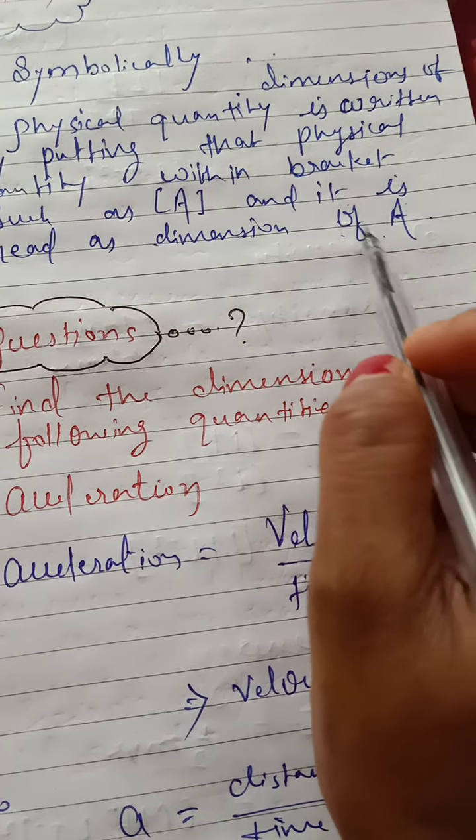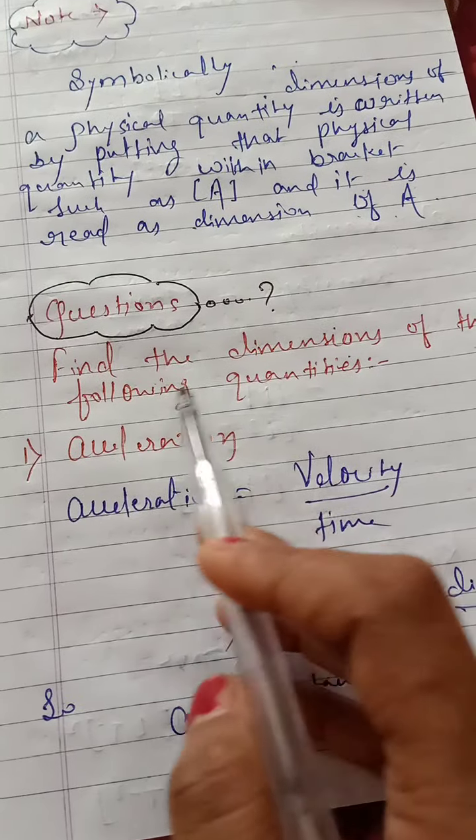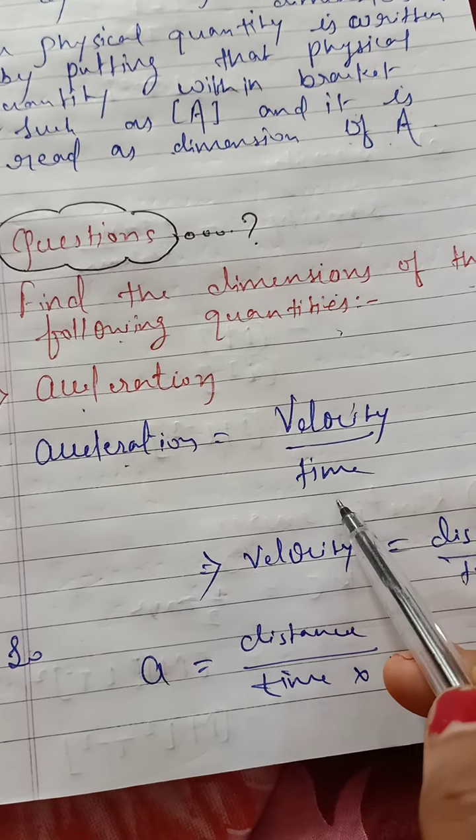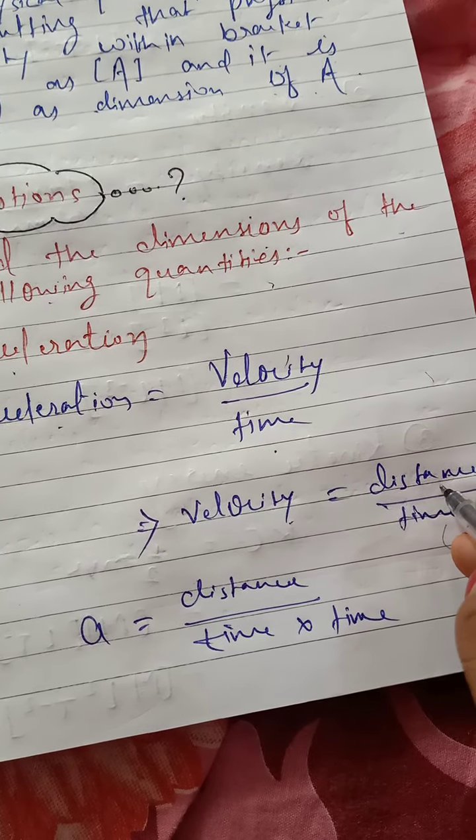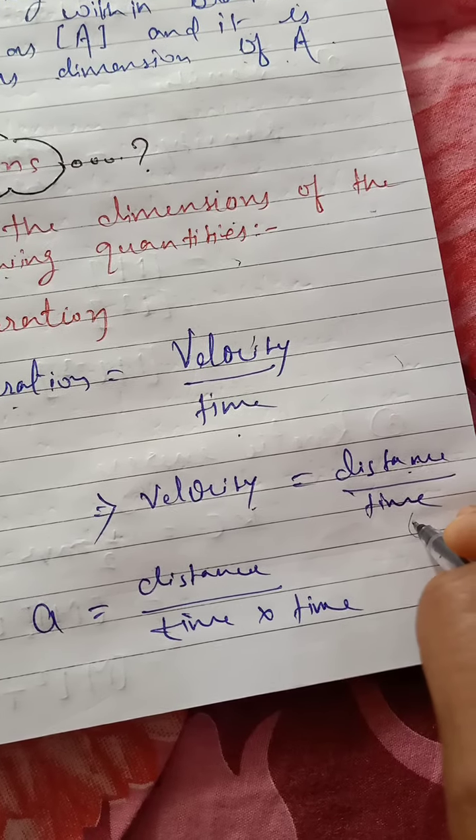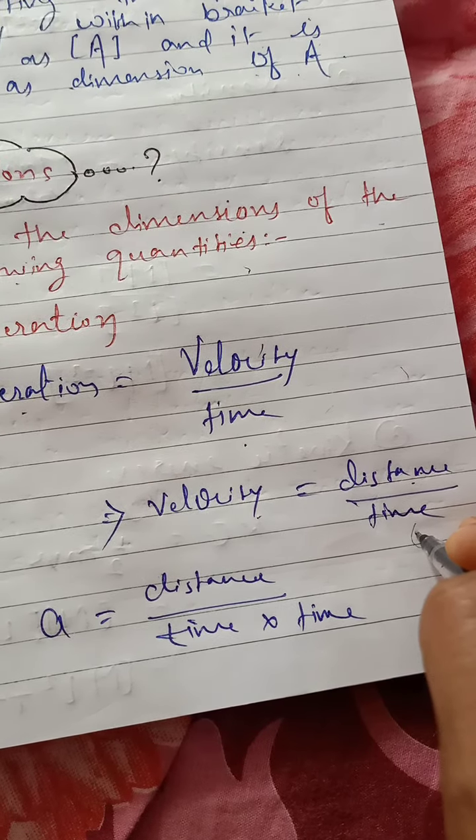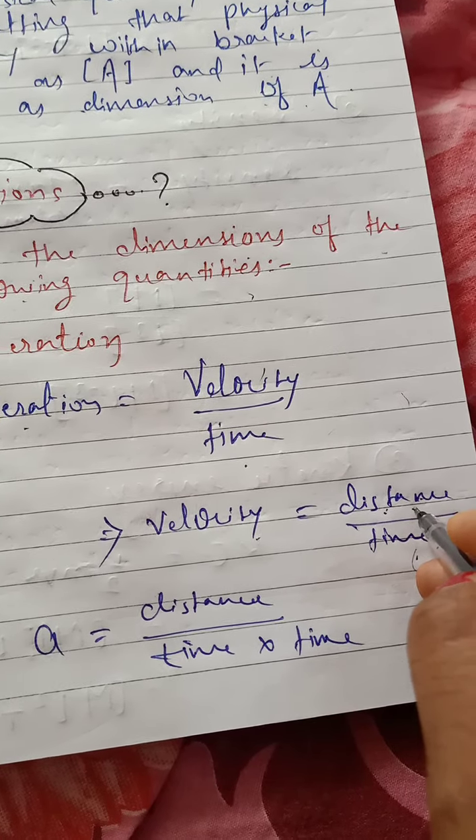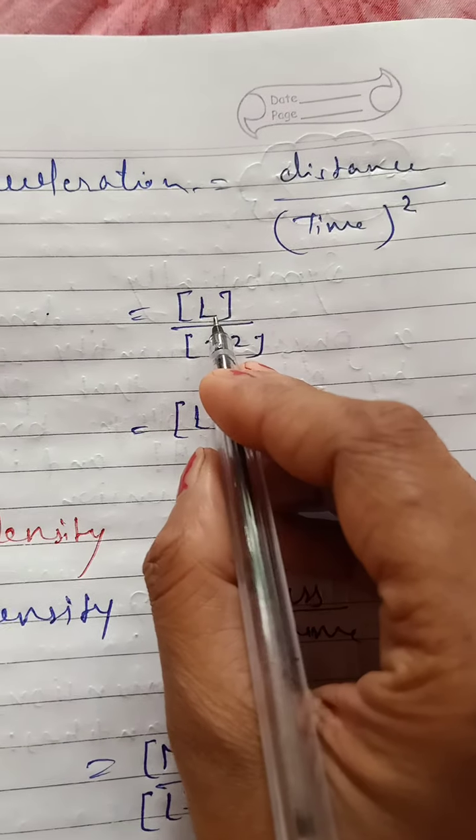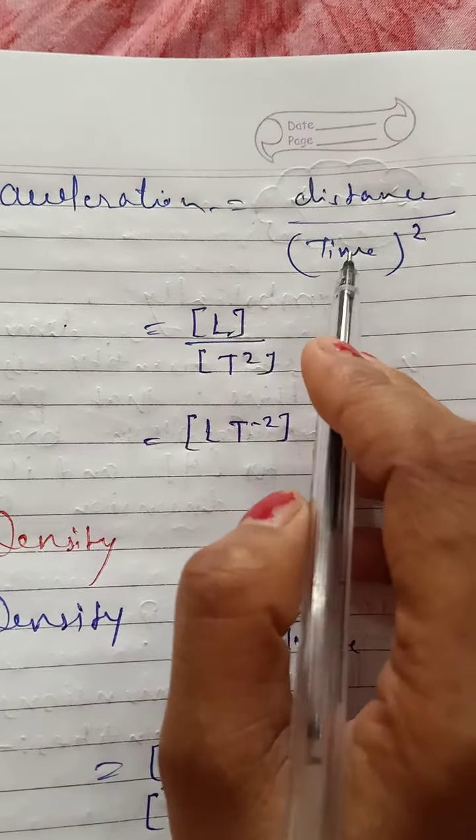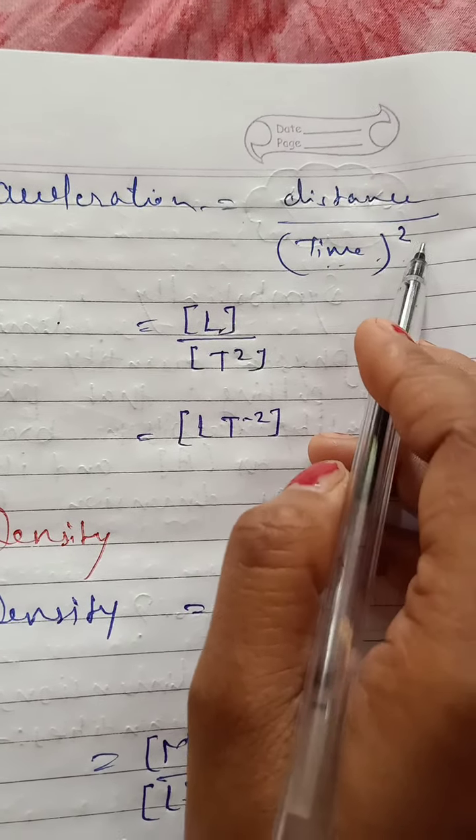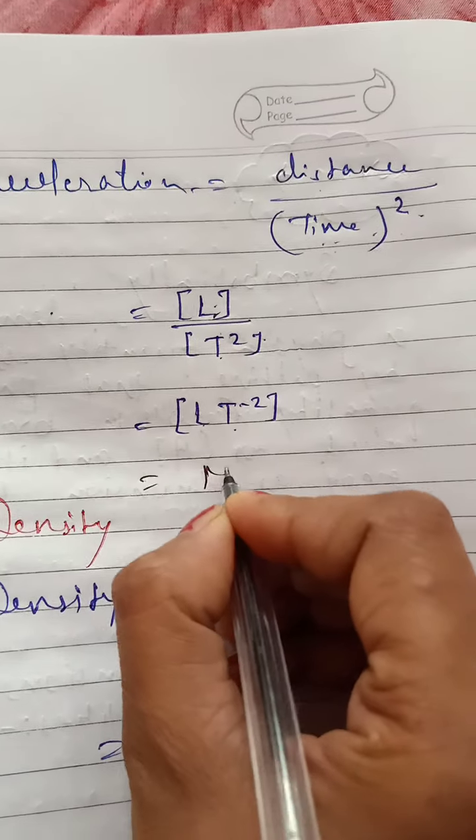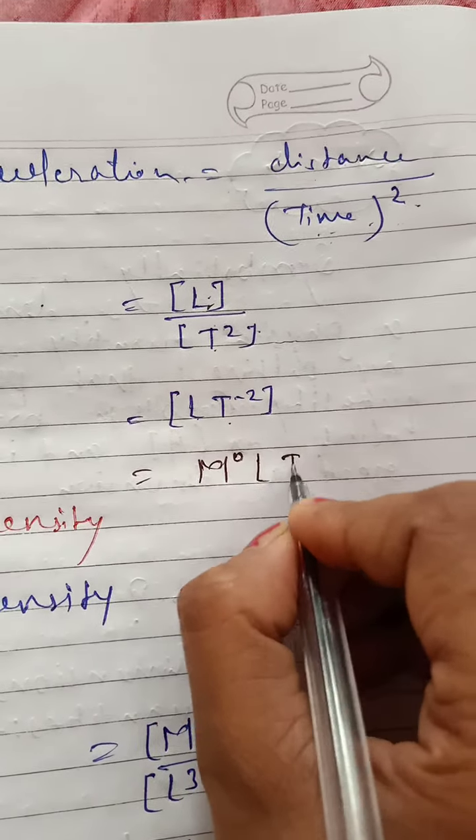My question is, find the dimension of the following quantities. The first question is acceleration. The formula of acceleration is velocity upon time, and velocity is distance upon time. Displacement and distance both are length. So acceleration is equal to distance upon time multiplied by time. It will be time square. So distance will be capital L and time will be T square, so it will be L T to the power minus 2. You can also write M to the power 0, L to the power 1, and T to the power minus 2.